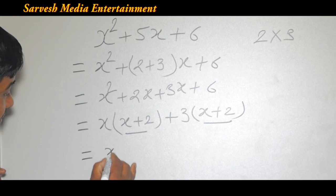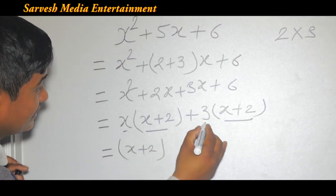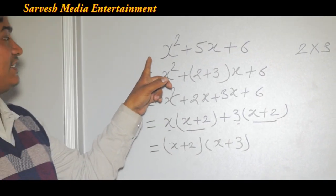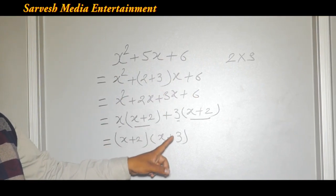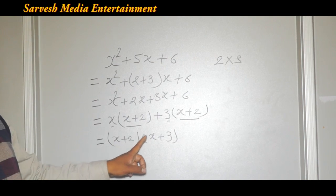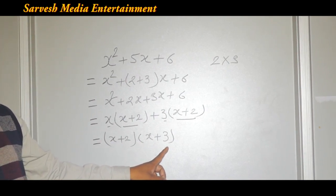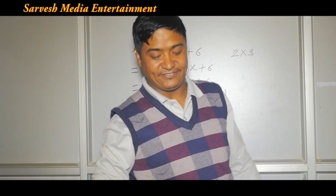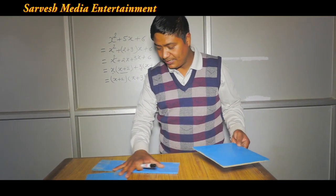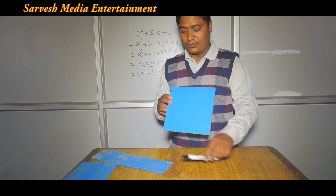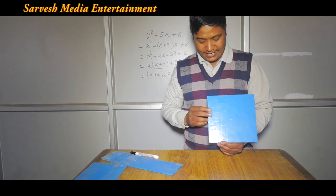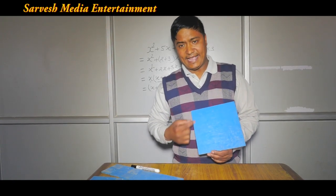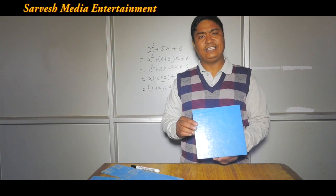x plus 2 is common, and 3 is common, giving x plus 2. So x squared plus 5x plus 6 factorizes to (x plus 2)(x plus 3).